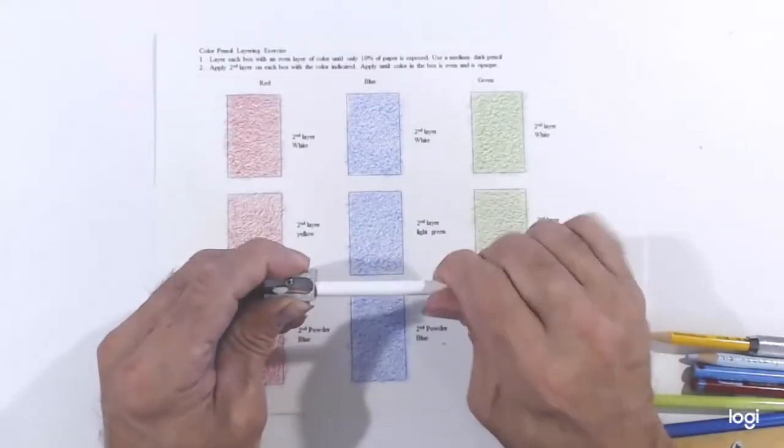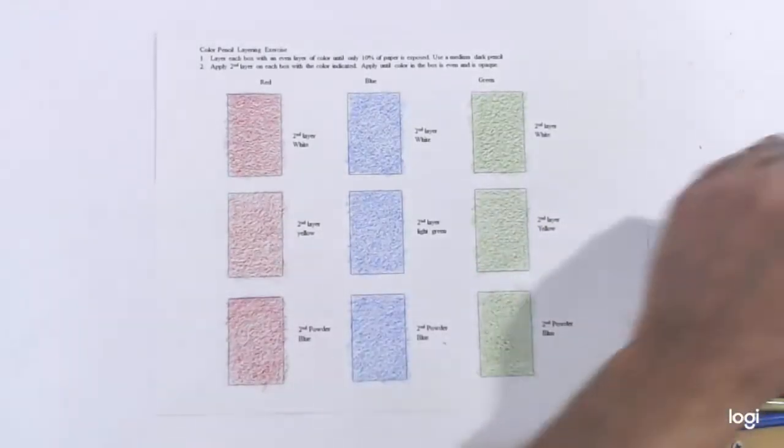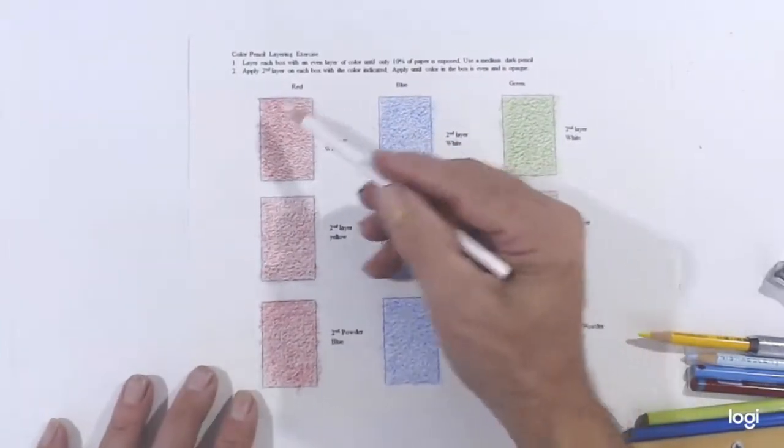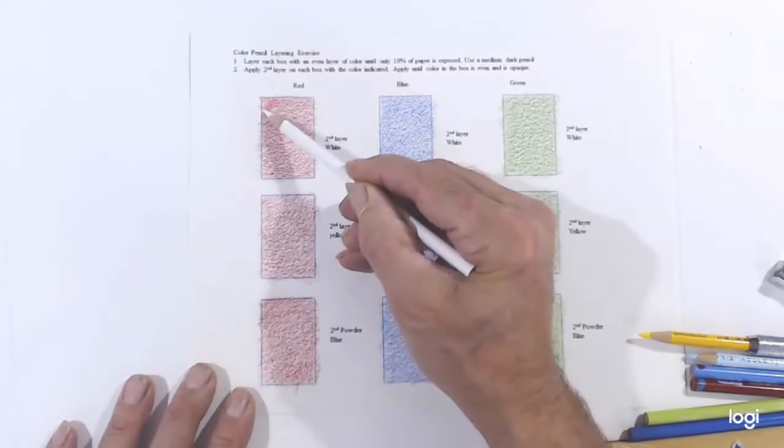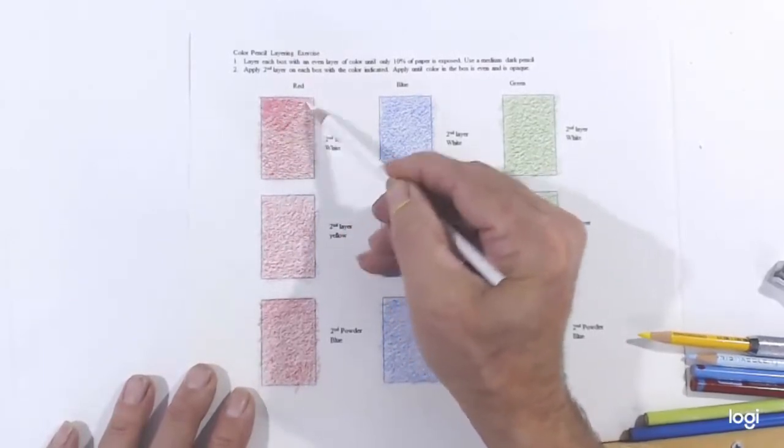Now I will start with the second layer. The first color I'll use is white, so the top box will get white. Then I'll move down to the second box, which is yellow in this case, and the third box will be powder blue.